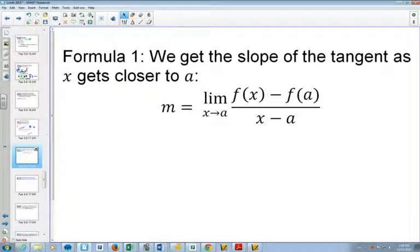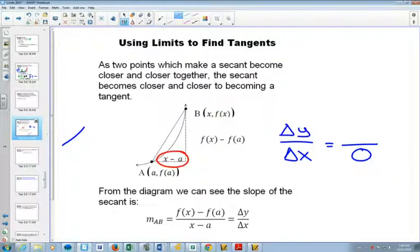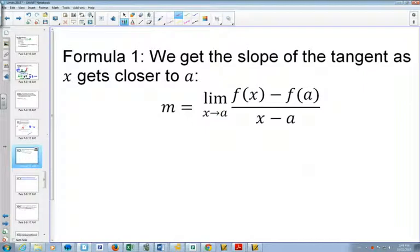On the bottom of our equation, we just have the run, which as you can see from the diagram here, once I erase these, that's just x minus a, because we have our x-coordinate here and our a-coordinate there. And that distance between them would just be x minus a. Now, we want the limit of x to approach a, so that x gets really, really close to a, and then that secant line will become the tangent line.